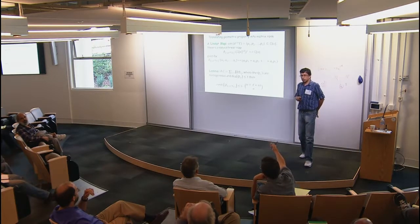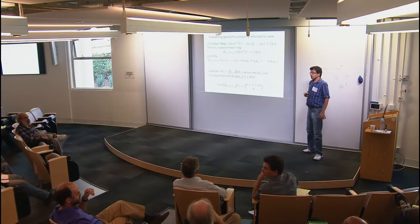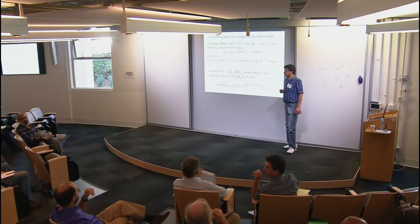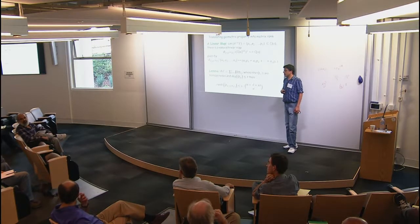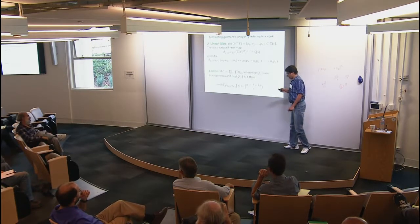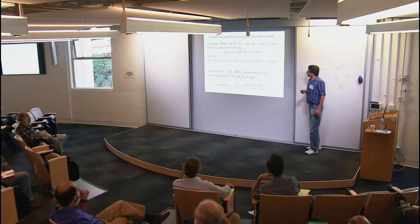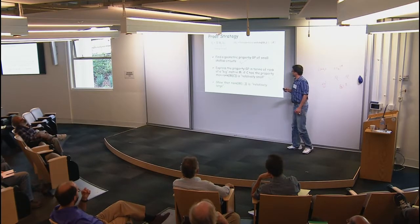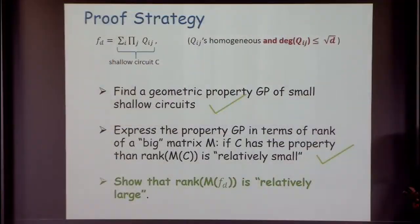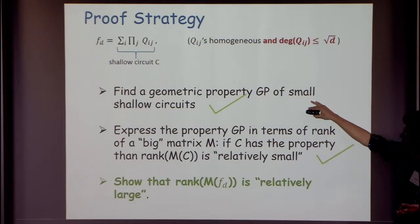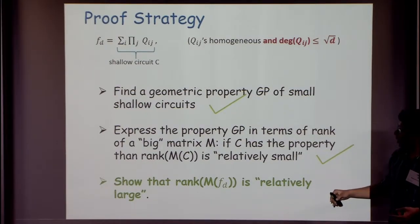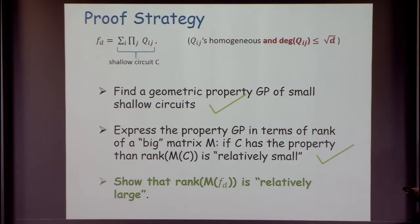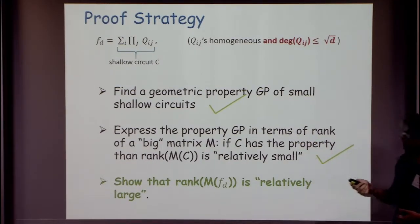So to summarize: we've converted the geometric singularity property of shallow circuits into an upper bound on the rank of a large matrix. Now we must show that for our explicit polynomial f_d, the rank of this matrix is large.